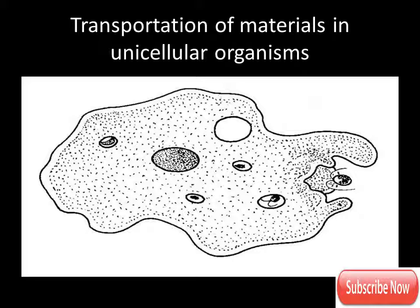A well-defined transport system is absent in simple unicellular organisms like amoeba because the cell remains in direct contact with the environment. So the three key points for unicellular organisms are: materials move in and out by diffusion, circulation is maintained by the streaming movement of cytoplasm, and a well-defined transport system is absent due to direct contact with the environment.